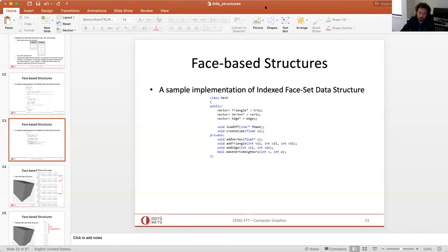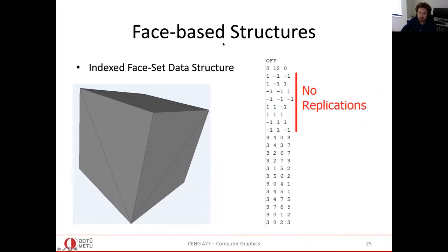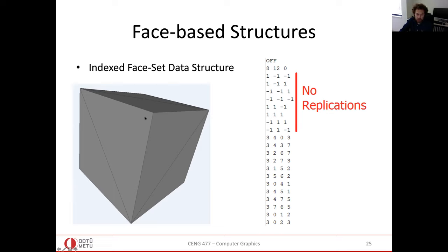Let's look at the OFF file format. At the start, you have vertex coordinates listed one by one — x, y, z for each vertex. Below that, each face line first specifies the number of edges in the polygon — 3 for a triangle, 4 for a quad — followed by the vertex indices. For example, '3 4 0 3' means connect vertices 0, 3, and 4 to form a triangle.